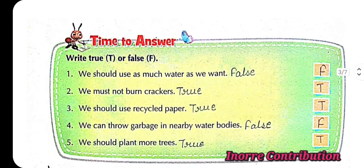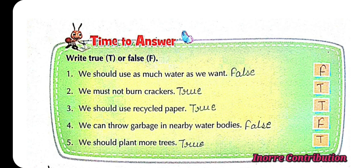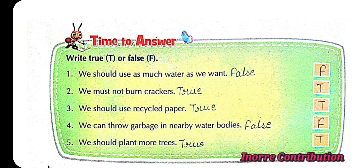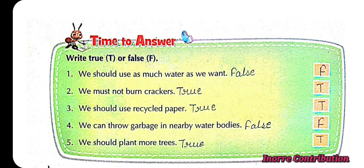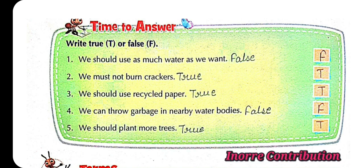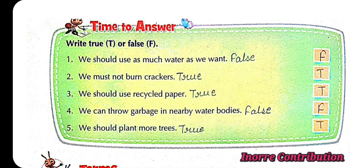Time to answer: Write true or false. First: we should use as much water as we want — False. Second: we must not burn crackers — True. Third: we should use recycled paper — True. Fourth: we can throw garbage in nearby water bodies — False. Fifth: we should plant more trees — True.